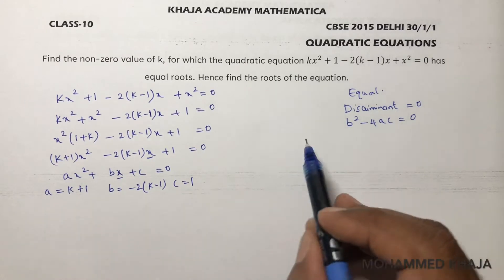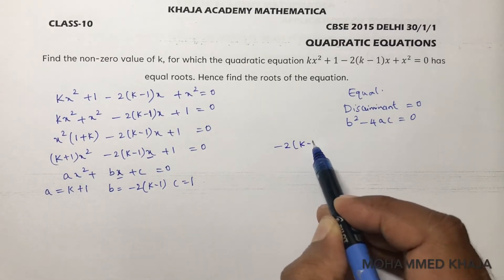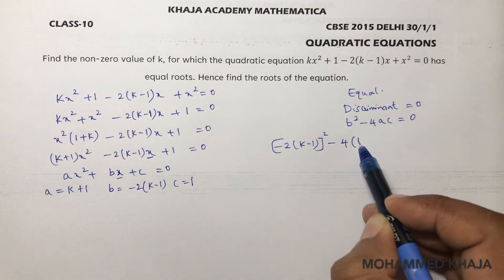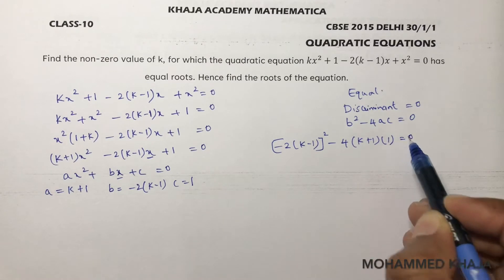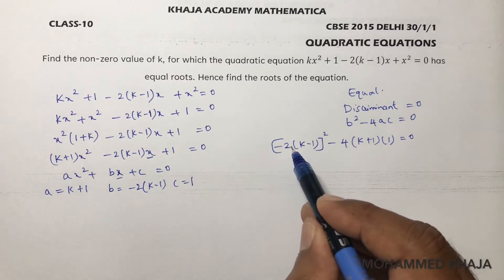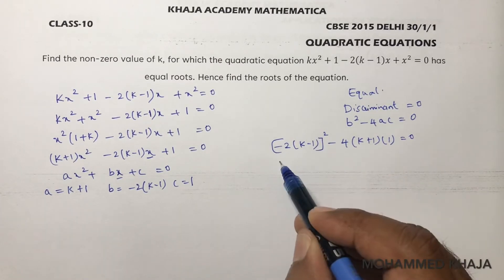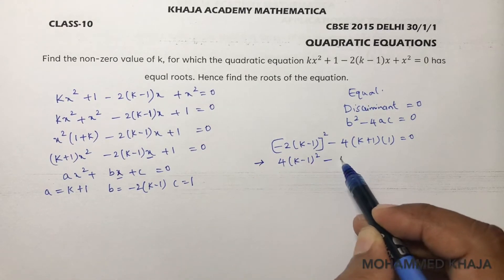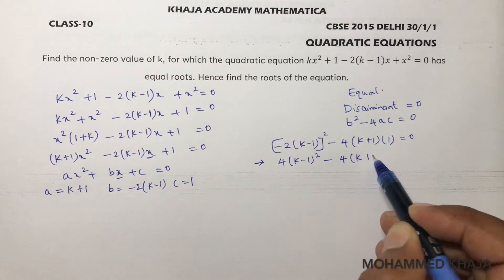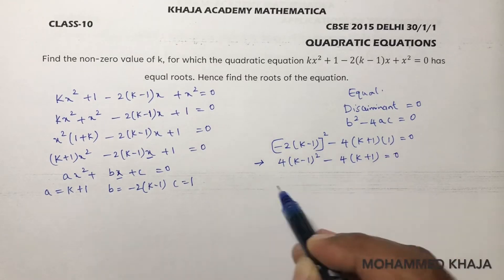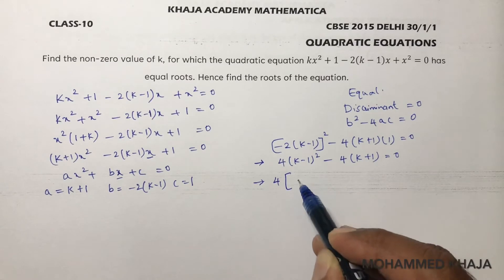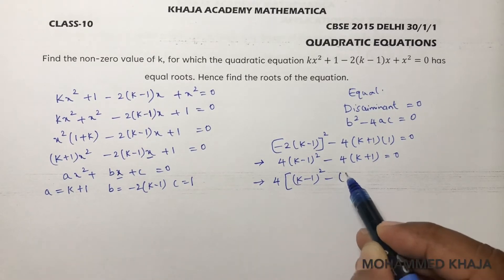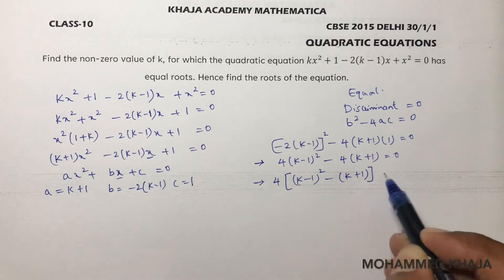Now substitute into the discriminant: [-2(k-1)]² - 4(k+1)(1) = 0. This gives 4(k-1)² - 4(k+1) = 0. Taking 4 as common, you are left with (k-1)² - (k+1) = 0.